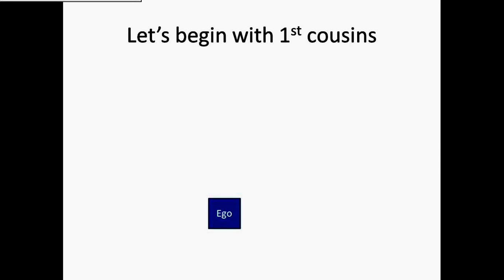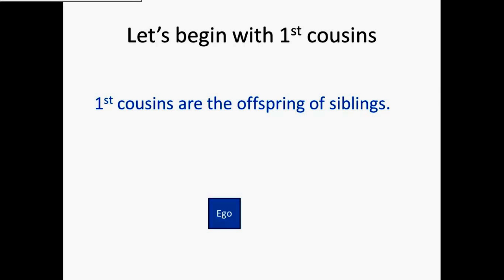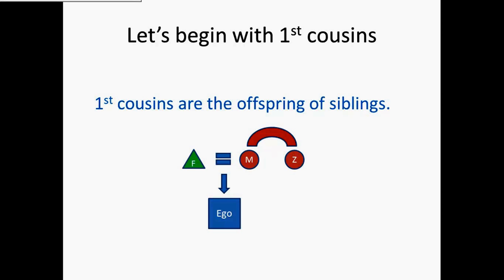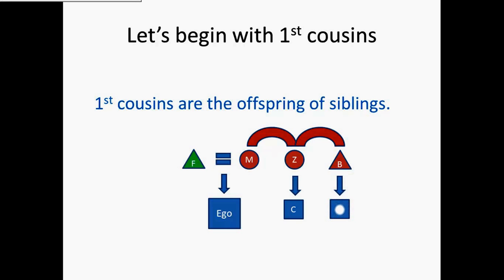To do this we'll start with ego and give ego some first cousins. A cousin is the offspring of two or more siblings, so our cousins are the offspring of the siblings of our parents. We'll give ego a father, marry his father to a mother, and then give ego's mother a sister marked with a Z — in kinship diagrams in anthropology, Z means sister. We'll give that sister some children, and those are cousins. We can also give the mother's brother, what we would call an uncle, some offspring, and those are also our first cousins.